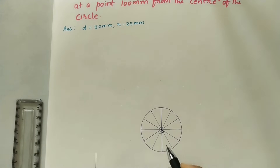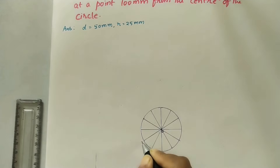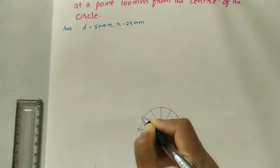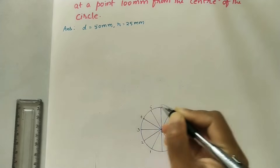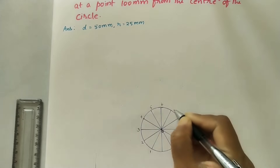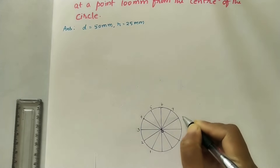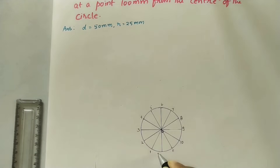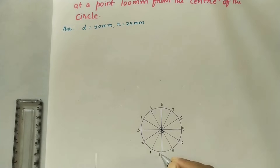Mark the intersection points. Starting from here — this is the first point, second, third, fourth, fifth, sixth, seventh, eighth, ninth, 10, 11. This is the twelfth one. I am taking this as the twelfth point, which is the P point — the initial point.